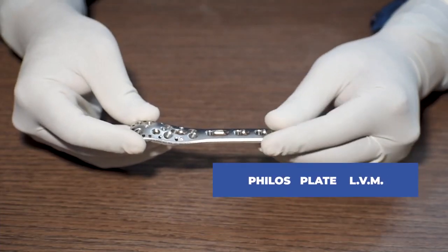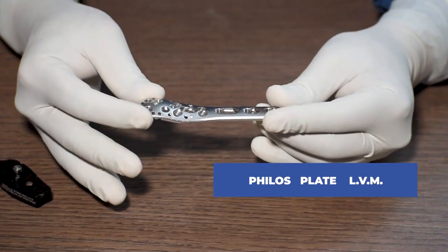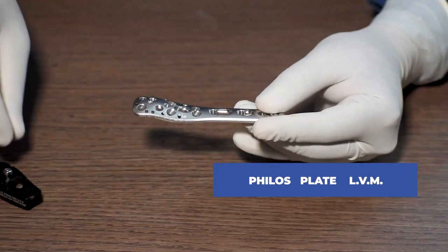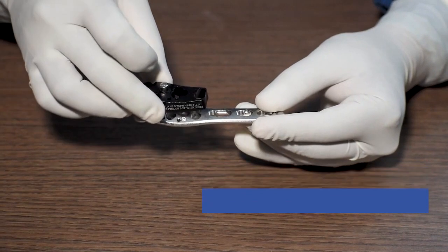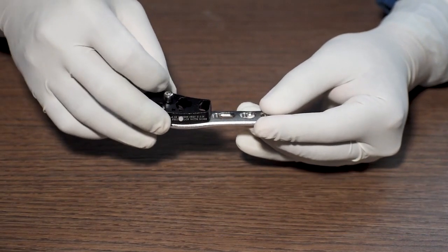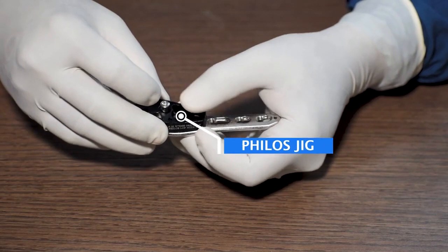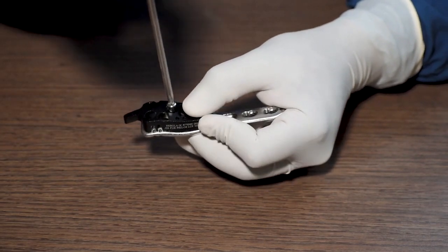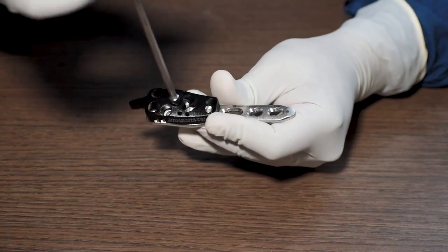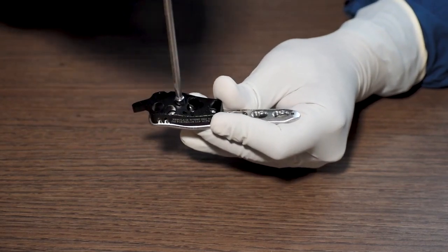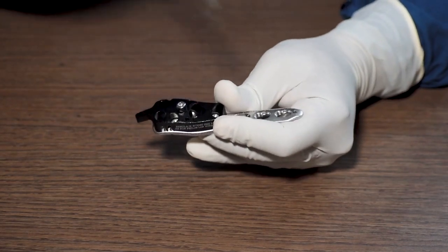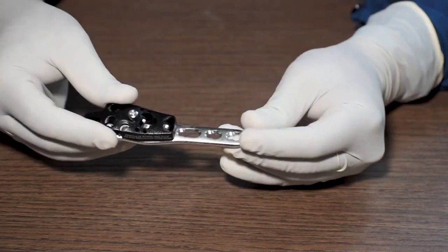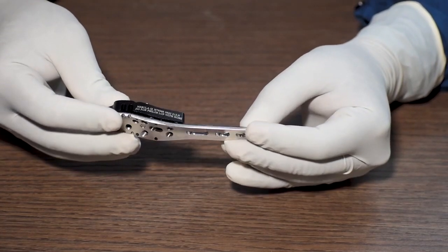This is the Phyllos plate LVM product. To start with, we will take the Phyllos plate and then attach the Phyllos jig with it. We will take a screwdriver and tighten this middle nut. Now the jig is completely attached with the Phyllos plate.